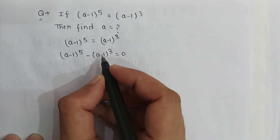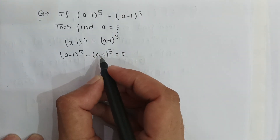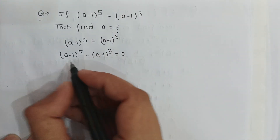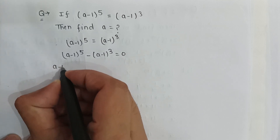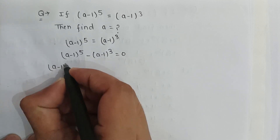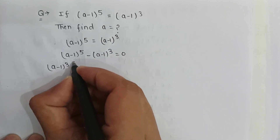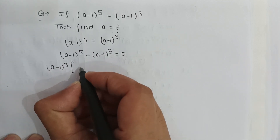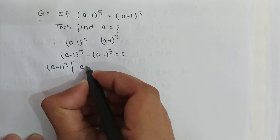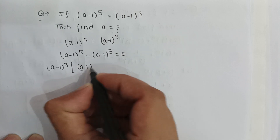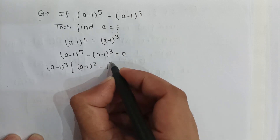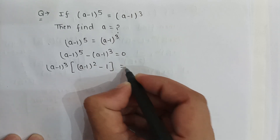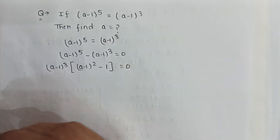If we take common (a minus 1) to the power 3, then it will be (a minus 1) to the power 3 multiplied by [(a minus 1) to the power 2 minus 1] is equal to 0.